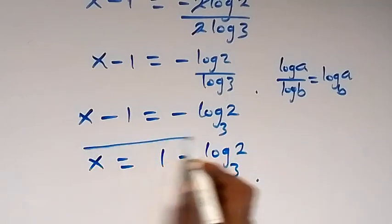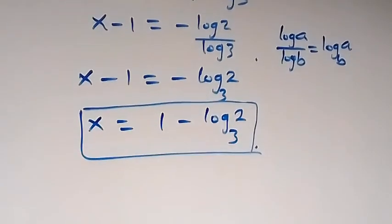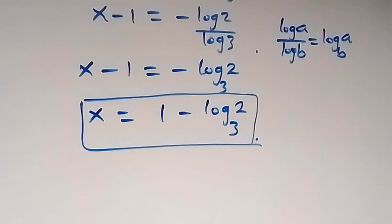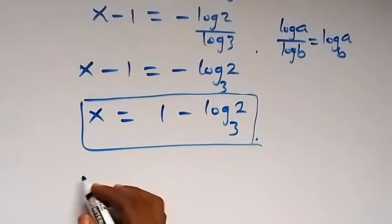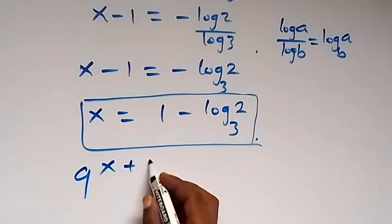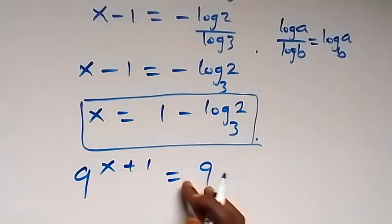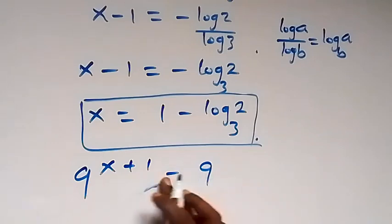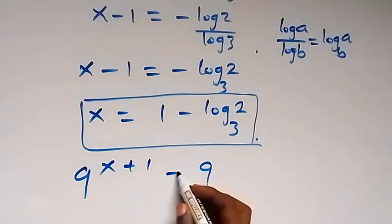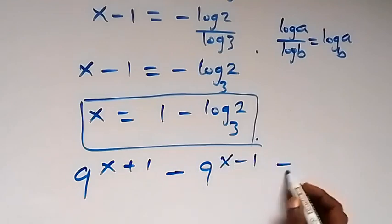So here we have the value of x in this given problem. Now, to check, from what we have — 9 raised to the power x plus 1, minus 9 raised to the power x minus 1, equals 20 — let's verify by substituting our value of x.